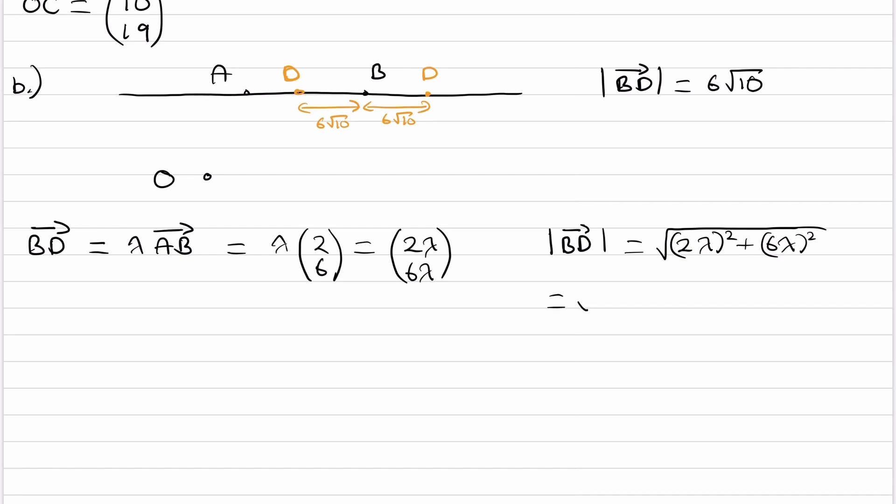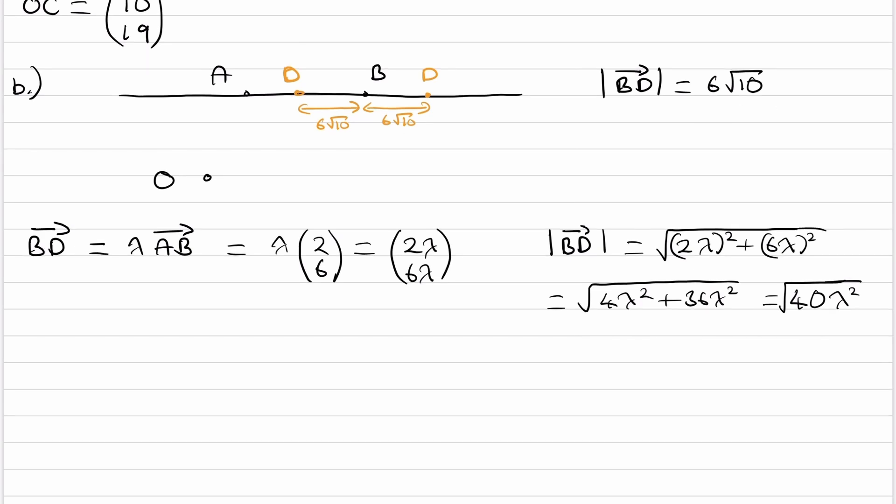This is then going to be the square root of 4λ² + 36λ², which is √(40λ²). So if this is what the magnitude of BD is equal to, and it's also equal to 6√10, we can equate the two things. So √(40λ²) is equal to 6√10.